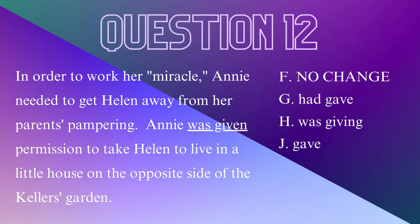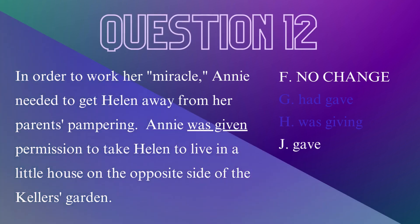Question 12. 'Annie was given permission to take Helen to live in a little house on the opposite side of the Keller's garden.' Which verb or verb phrase is correct — Annie was given, Annie had gave, Annie was giving, or Annie gave? The two that sound correct are F and J, but they have different meanings. F retains the meaning that Annie obtained permission; J implies Annie was the one who gave permission, not the Kellers. The correct meaning is F — no change.